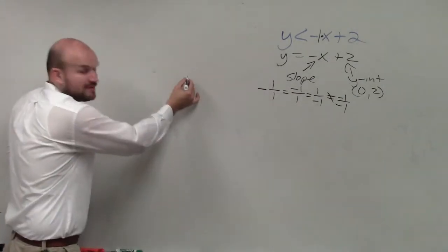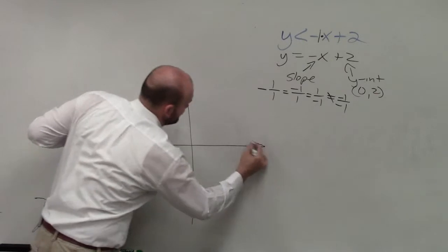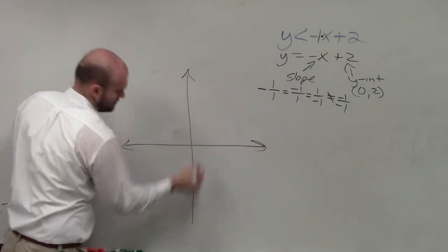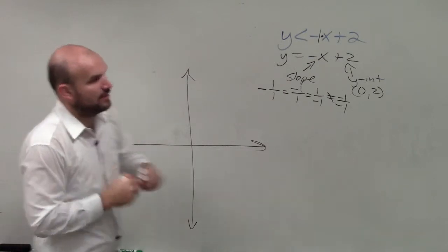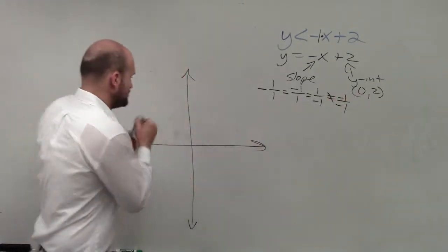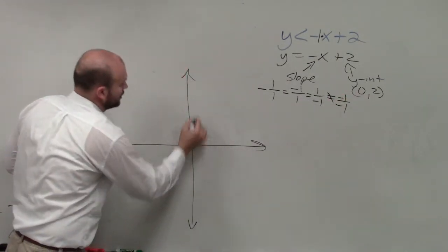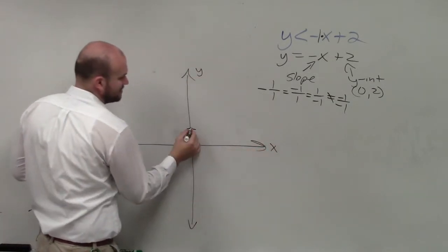So now let's go and get on to graphing. To graph this, all we simply need to do is identify the y-intercept again first, which is your point 0, 2. So I go on my y-axis. I plot the point 0, 2.